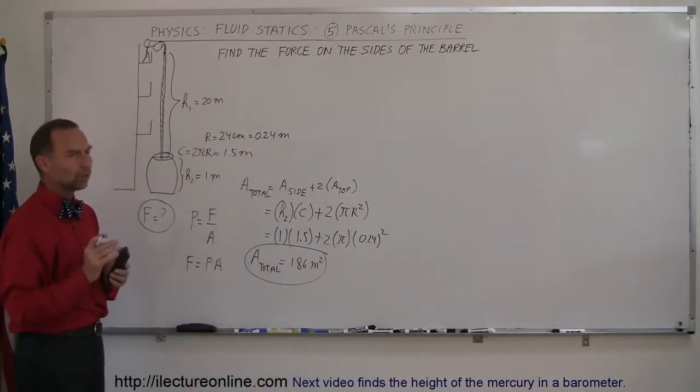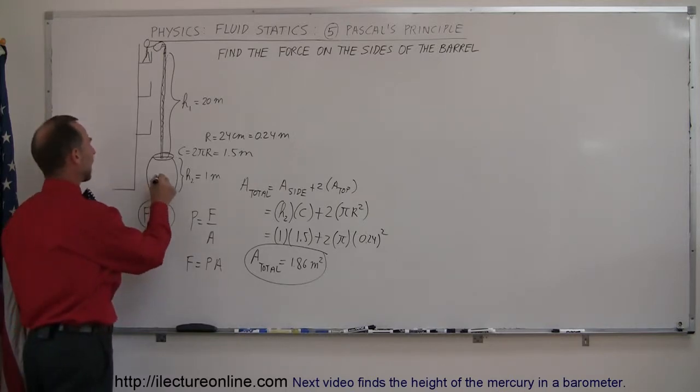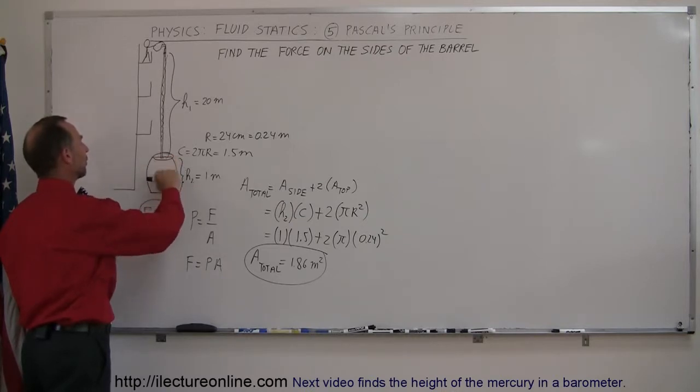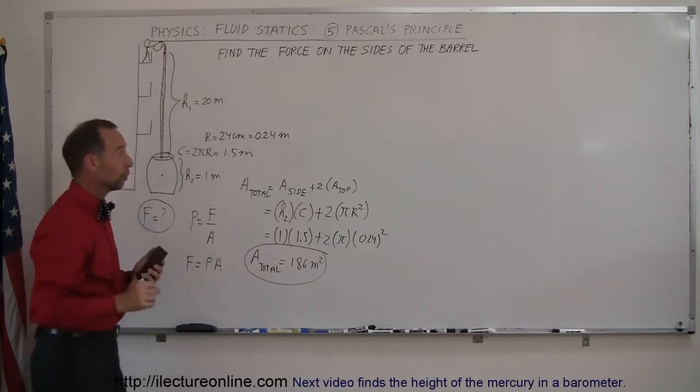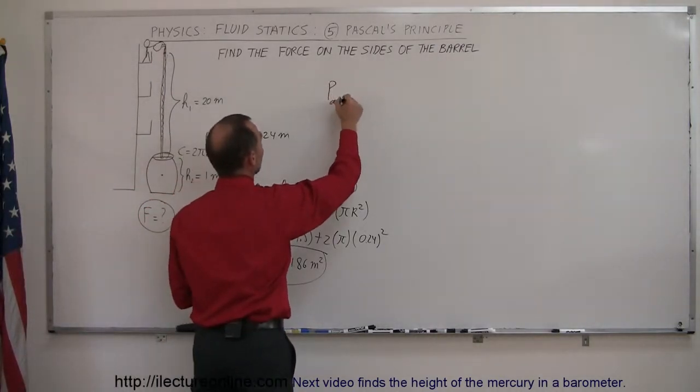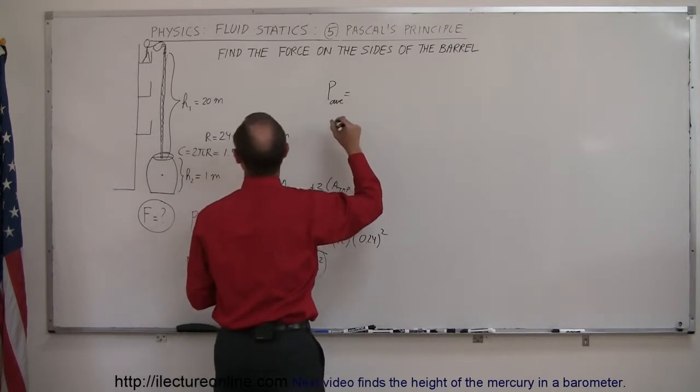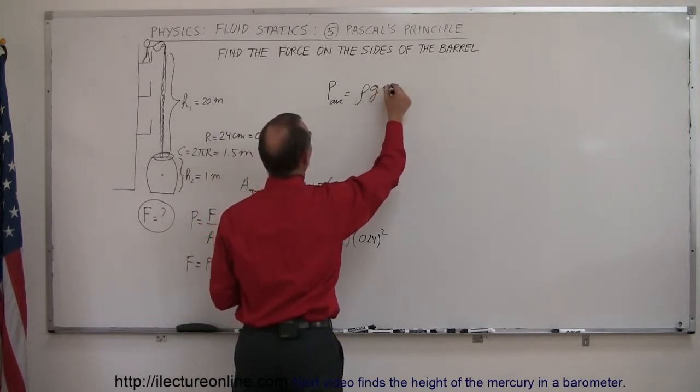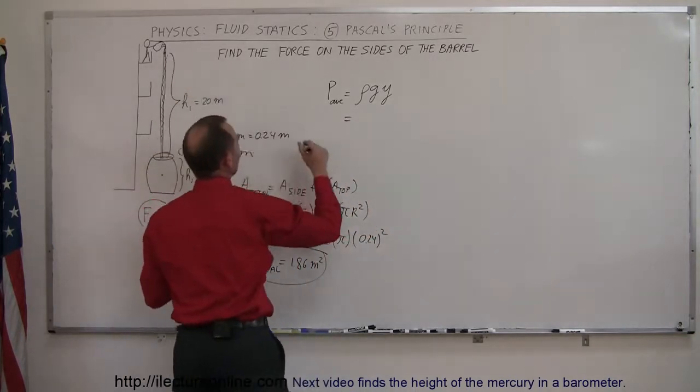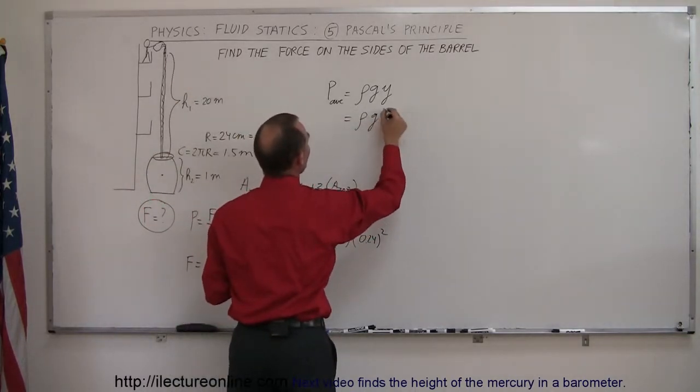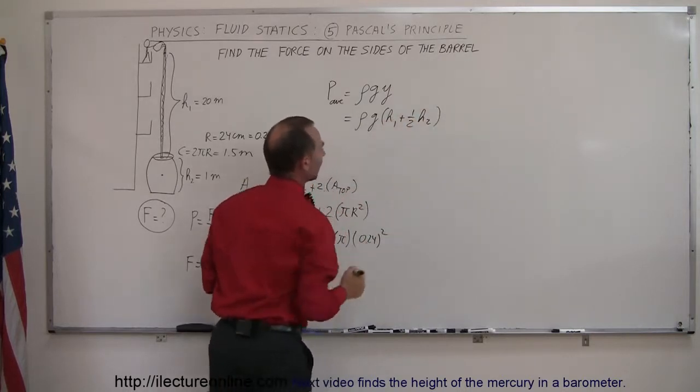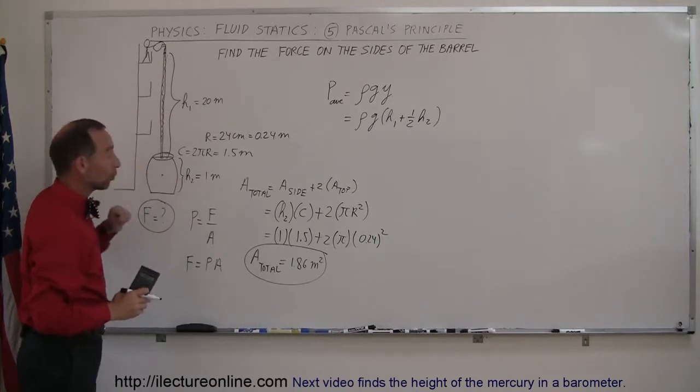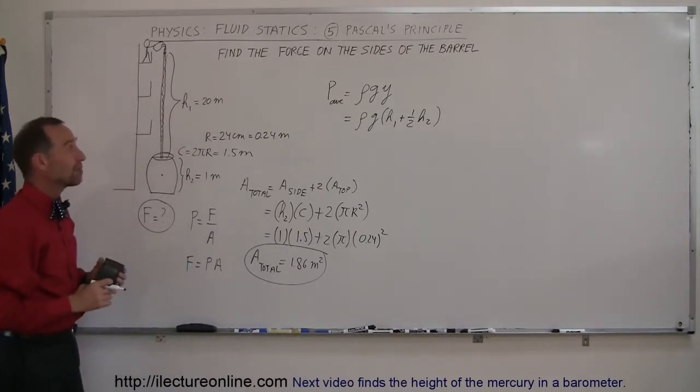Then we multiply that times the pressure of the fluid inside. The average pressure is at the middle of the barrel, caused by the water above that point all the way through the tube to the very top. The average pressure is equal to ρgh, and h is the height of the water column—ρg times h1 plus half of h2. Since h1 is 20 meters and h2 is 1 meter, it would be 20.5 meters high water column.